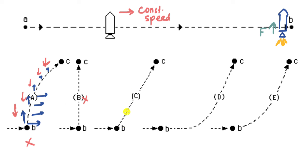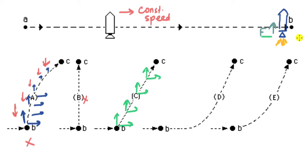Option C says the rocket will move at a straight diagonal angle. For this path to work, both horizontal and vertical velocity would have to remain constant throughout. The horizontal velocity will definitely stay constant since there is no horizontal force. But there is a constant force in the vertical direction after point B, which means constant acceleration, which means the vertical velocity is constantly changing. A straight-line diagonal path requires constant vertical velocity, so Option C is also wrong.